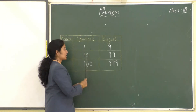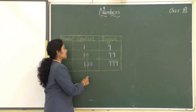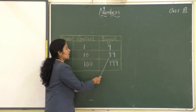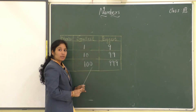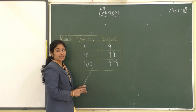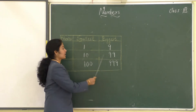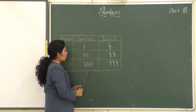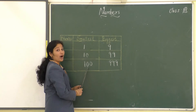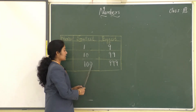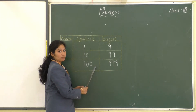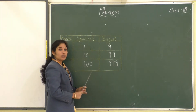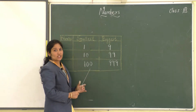We will get 10, which is the smallest two-digit number. What is the biggest two-digit number? Yes, 99. If you add 1 to the biggest two-digit number, you will get 100, which is the smallest three-digit number. What is the biggest three-digit number? 999.